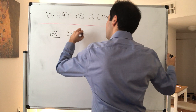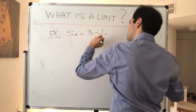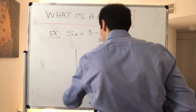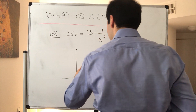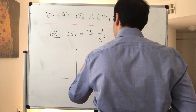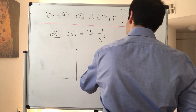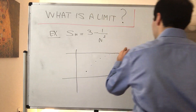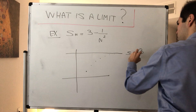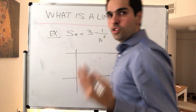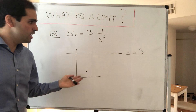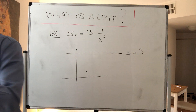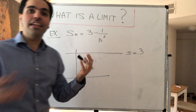Suppose your sequence is 3 minus 1 over n squared. Picture-wise, it starts at 2 because n equals 1, and then it goes up and up, seeming to go to the value s equals 3. Intuitively, the sequence approaches 3 as n goes to infinity, and our goal is to make this rigorous.